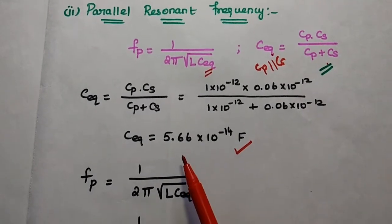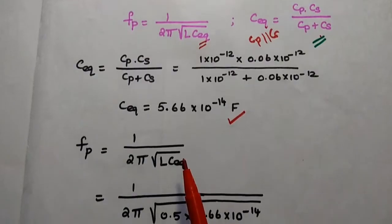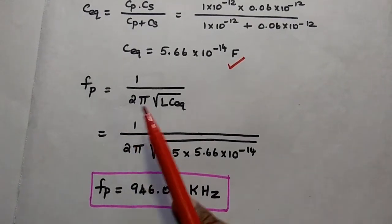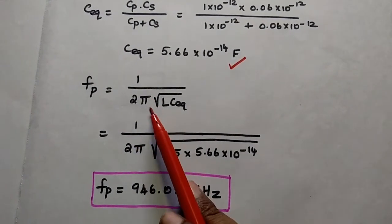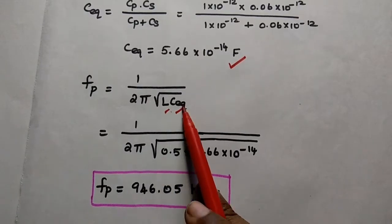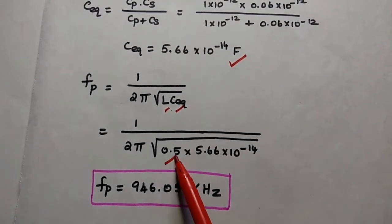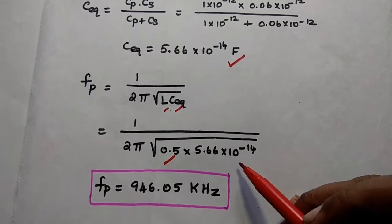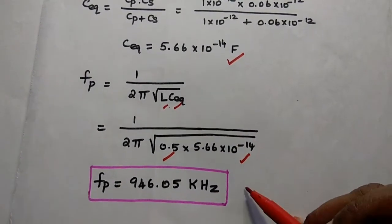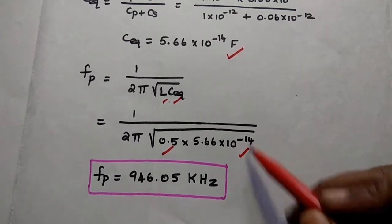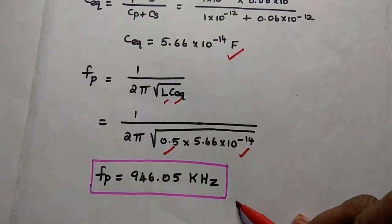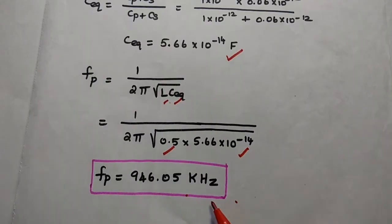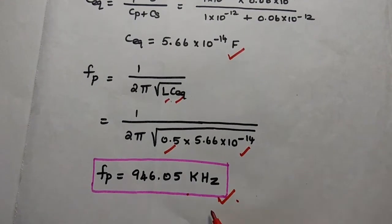Now that C_equivalent is found, we substitute that value into the parallel resonant frequency formula: Fp = 1 by 2π√(L × C_equivalent). With L = 0.5 and C_equivalent = 5.66 × 10⁻¹⁴, simplifying gives us Fp = 946.05 kilohertz. This is the parallel resonant frequency.